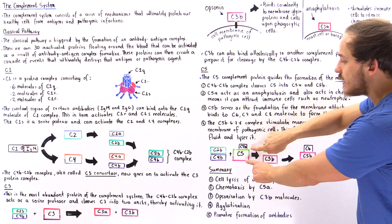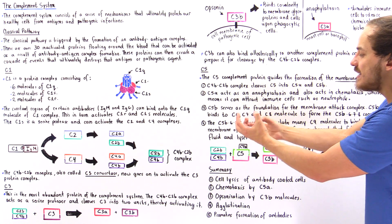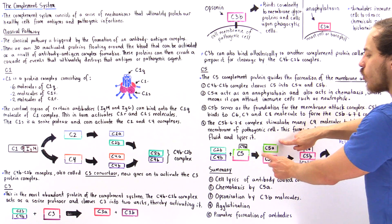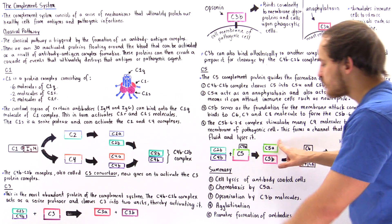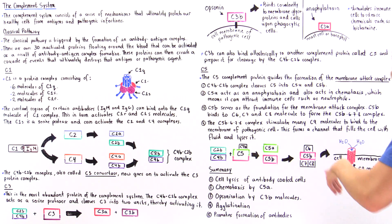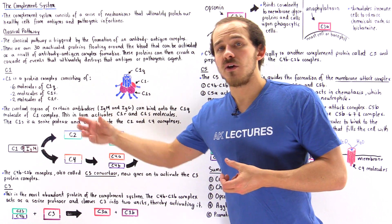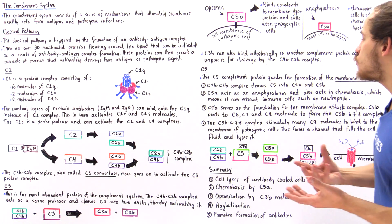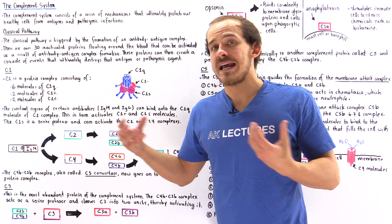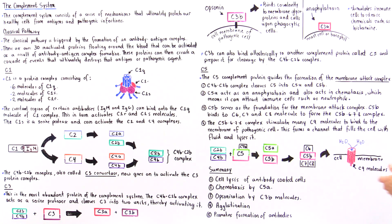C3B binds onto the allosteric site of C5, creating a conformational change in its structure. Then the C4B-C2B complex cleaves C5 to form C5A and C5B. C5A doesn't only act as an anaphylatoxin and stimulate the release of histamine — C5A also acts in a process known as chemotaxis. Chemotaxis is the process by which cells use chemicals to communicate with one another and call upon one another, for example calling upon neutrophils. C5A basically acts in this process of chemotaxis.